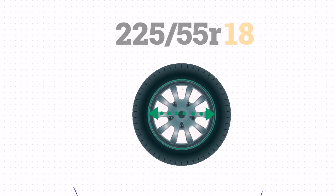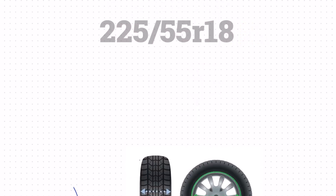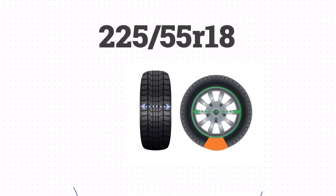And the final number, 18, is the wheel size. Now that we've got the width, sidewall size, and wheel size, we can take all that together to get the height of the tire.